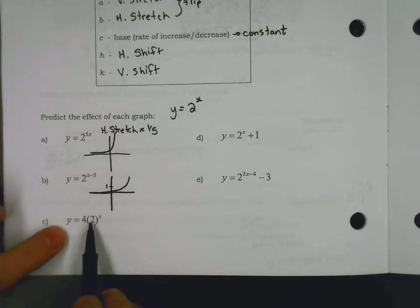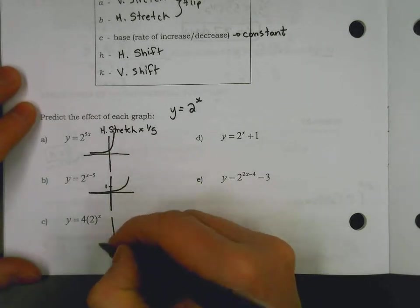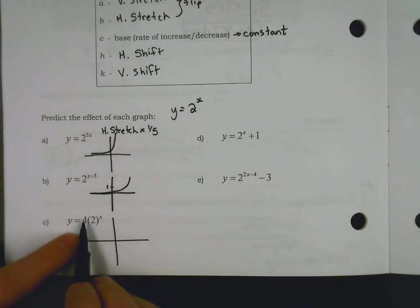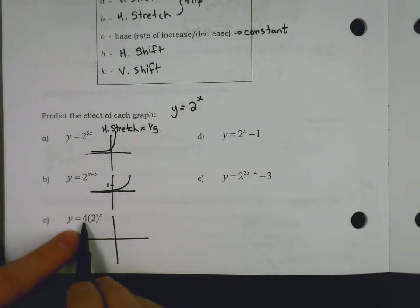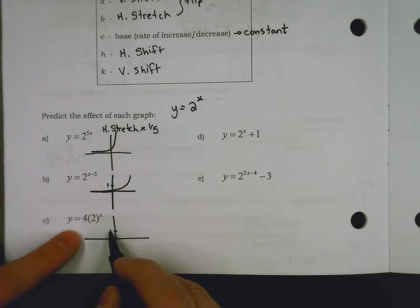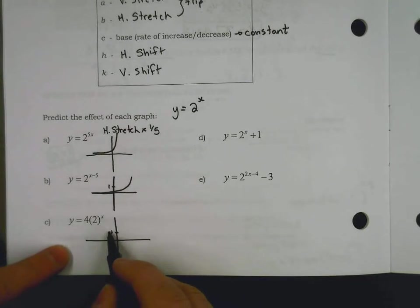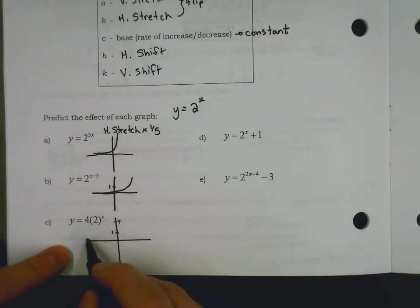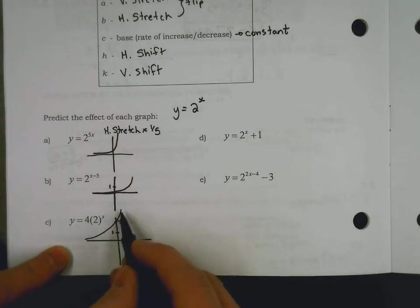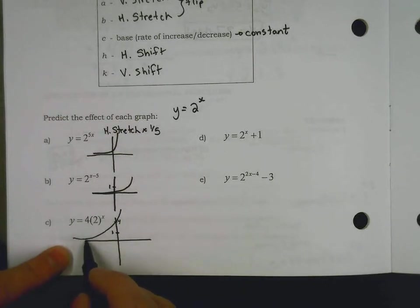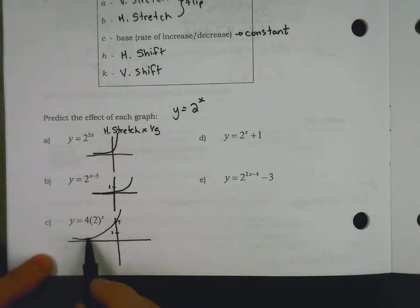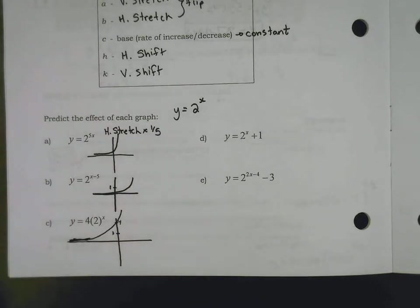For letter c, 4 times 2 to the x, we're talking about a vertical stretch by a factor of 4. And so again, not going through 1, we're probably going to have this stretched up to go through a 4. And so this will appear to rise a little bit more quickly perhaps, but it'll still level off to your horizontal asymptote.